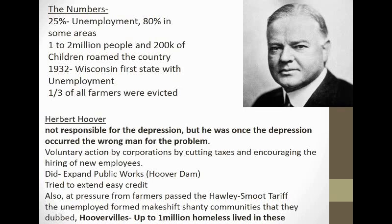Hoover also worsened the Depression — at least some have argued this — when he passed the Hawley-Smoot Tariff against the advice of some of his best advisors. Passed in 1930, largely at the pressure of farmers, it was a huge hike in tariffs on farm products like wheat — as high as 70% — and on many industrial products as high as 30%. This really devastated European trade with the United States. Many historians and economic historians argue that this isolationism during the Great Depression really worsened it, and that continuing to work on world trade, particularly with Europe, might have made things not as bad.